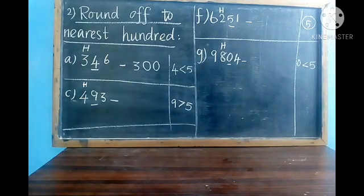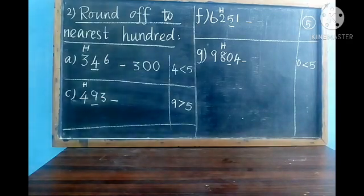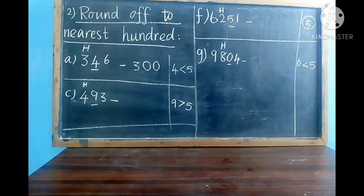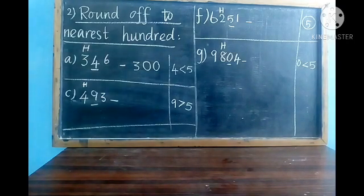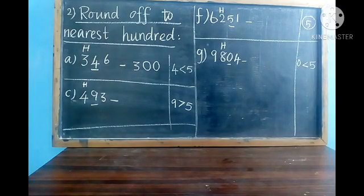Next, C question: 4 is in the hundreds place, so write H above 4, then underline the digit 9 in the tens place. Is 9 smaller or greater than 5? 9 is greater than 5. So what is the next 100 of 400? It is 500. As 9 is greater than 5, we write the next 100. The answer is 500.